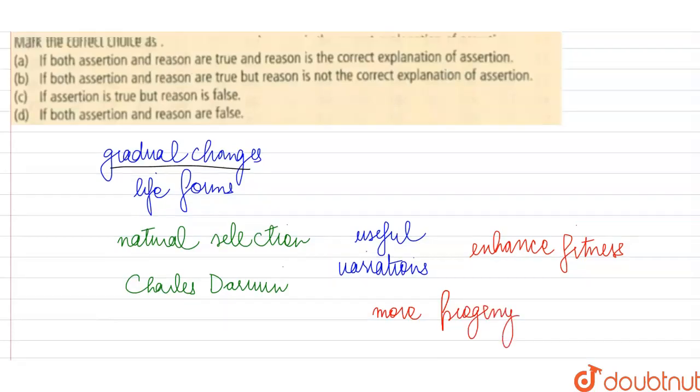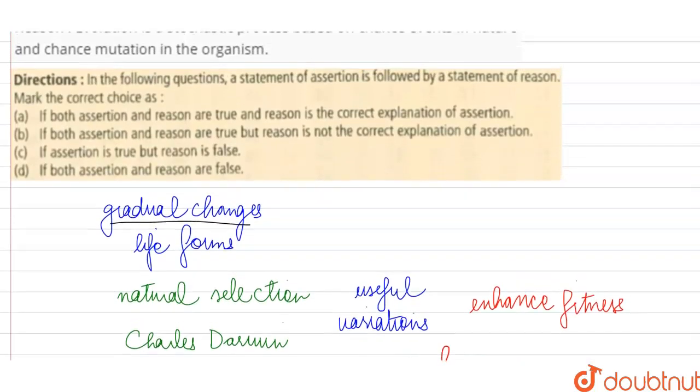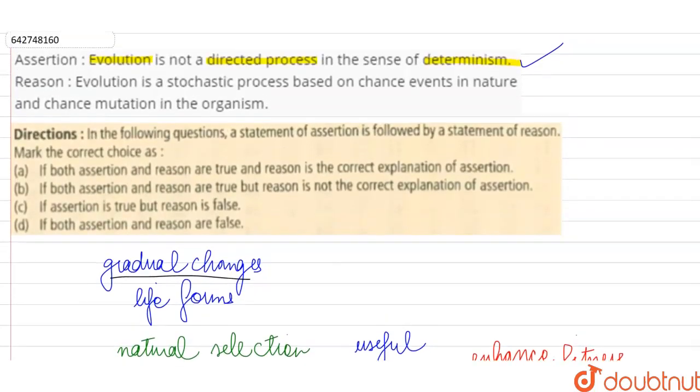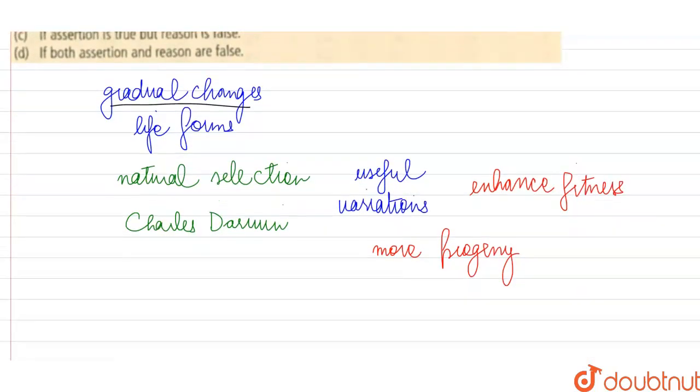When we look at natural selection, it seems like evolution is a very directional process because all of these changes which are going to take place in the frequency or the composition of the population because of natural selection, they take place in the form of some small and directional steps.